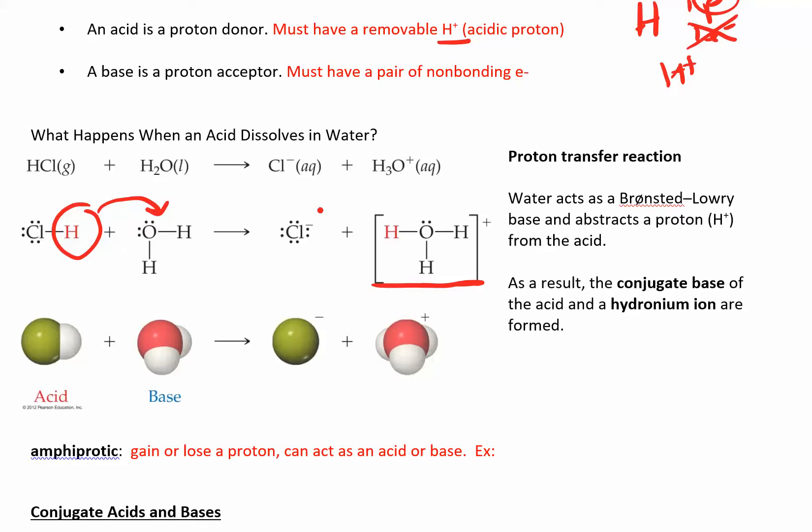In an acid-base reaction you're going to have an acid and a base on both sides. So here's your acid. Your HCl is an acid. This is a base. And then the conjugate acid over here looks like that. And the conjugate base on this side is that guy. So we're going to talk a little bit about conjugate acids and bases in the next section here.